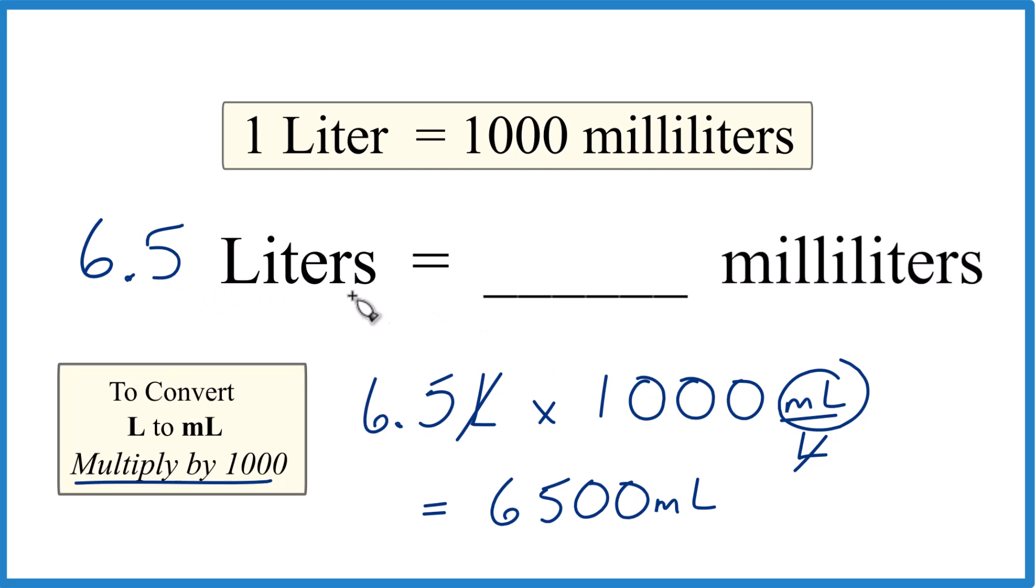So in answer to our question, 6.5 liters equals 6,500 milliliters.